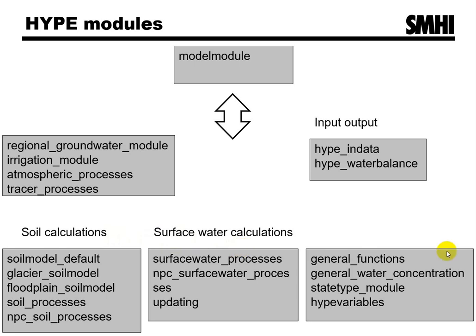These are the basic modules for general use. General functions are functions like the exponential function. General water concentration contains procedures for handling water with substances, for instance for adding to water. The state type module defines the states of HYPE according to the rules of HYS, and routines for allocating, initializing, etc. HYPE variables contains mostly Fortran parameters holding index to find your way around output and model parameters.